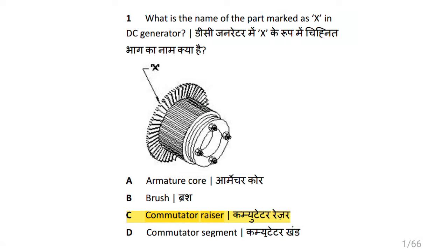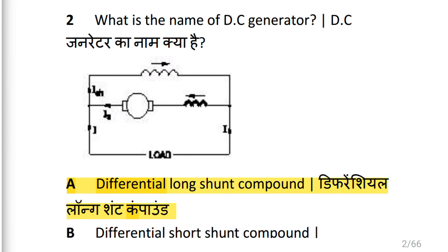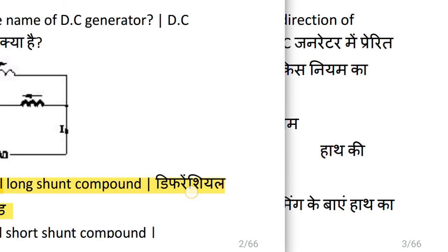Dear friends, we are going to see DC generator. What is the name of the part marked as X in DC generator? That is commutator. What is the name of the DC generator shown? That is differential long shunt compound.